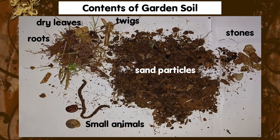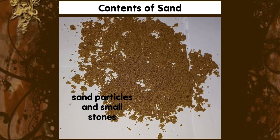Okay class, these are the contents of garden soil. As you can see, we have stones, sand particles, twigs, dry leaves, roots, and small animals. And these are the contents of sand: sand particles and small stones.